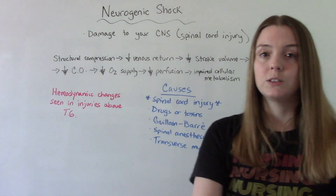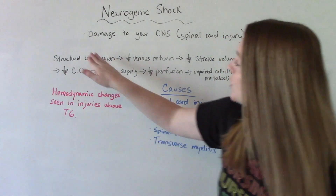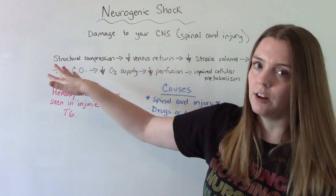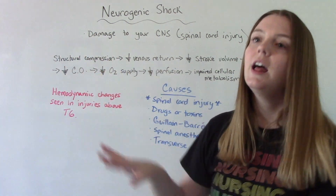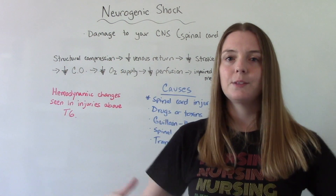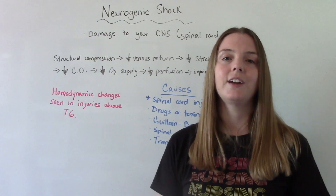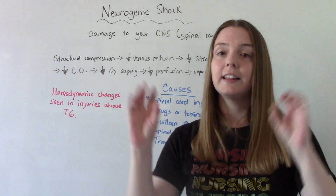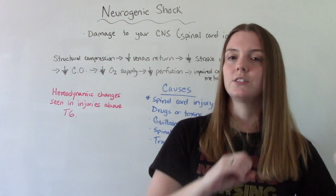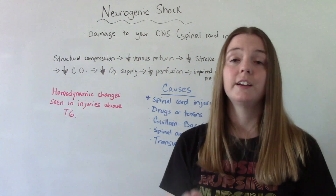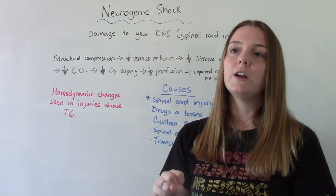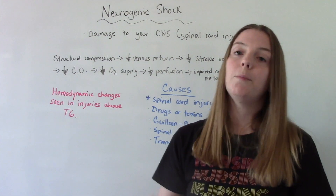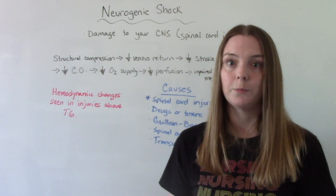The pathophysiology — the way this affects the body: structural compression or anything that's causing damage to your nervous system is the starter here. Your nervous system controls everything in your body — whether you have dilated blood vessels or constricted blood vessels, it can affect your heart rate, it can affect your temperature. So if it's not working properly, if it's been damaged, then it's going to start affecting other parts of your body.